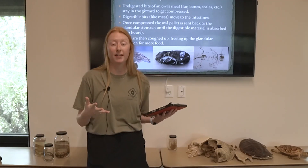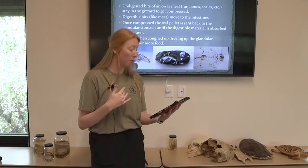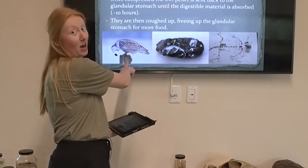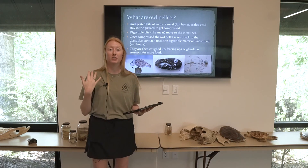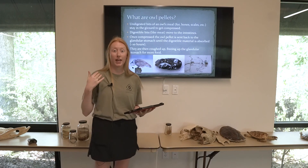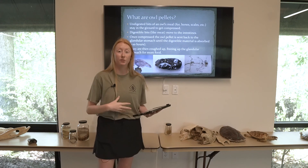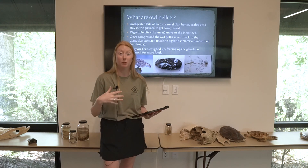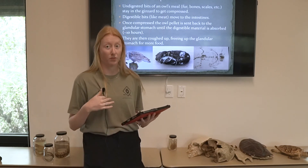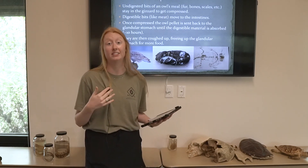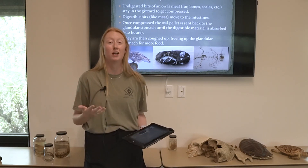Once the owl pellet is compressed, it is sent back through the glandular stomach so any remaining bits of meat can continue to be digested. Then everything goes in reverse and the owl will eventually regurgitate it — like right here. This frees up the glandular stomach so the owl can continue feeding, because if that stomach is full of indigestible material, the owl would always feel full and never get nutrition, which is not healthy for the bird.